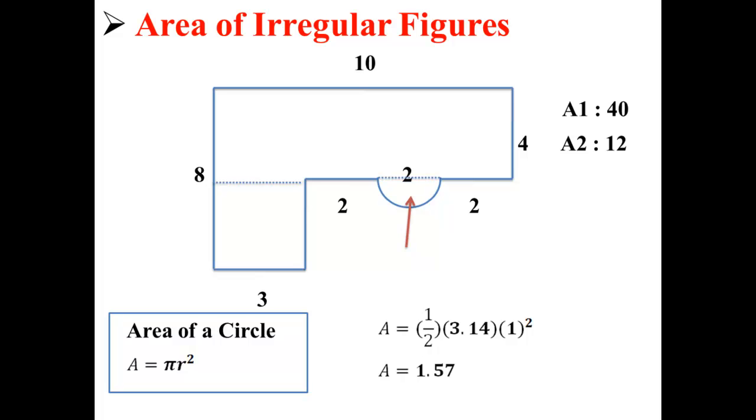Remember, because our diameter is 2, our radius must be 1. After we multiply these numbers, we get an area of 1.57. So the area of our third figure is 1.57.